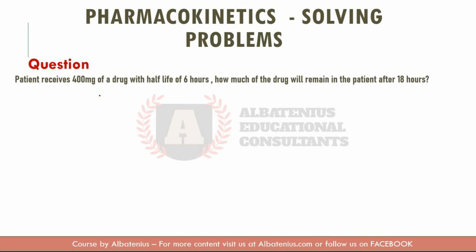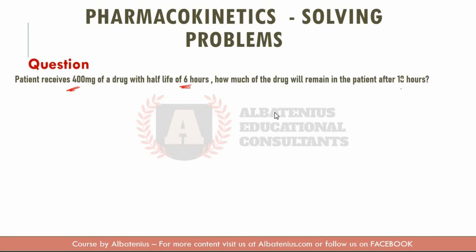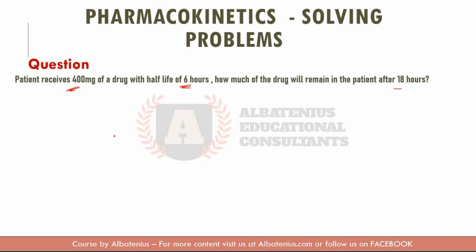So a patient receives 400 mg of a drug. And the T half, 6 hours. How much of the drug will remain in the patient after 18 hours? So, we know that after 3 half lives, 87.5% will be eliminated, right? So, this is what's to be eliminated. So, the remainder of the dose after 3 T halves is 12.5%. How did I get this?